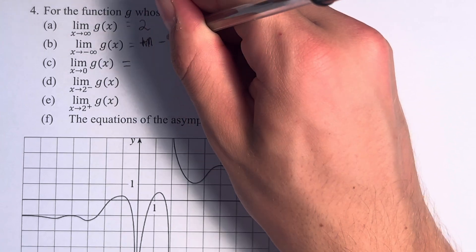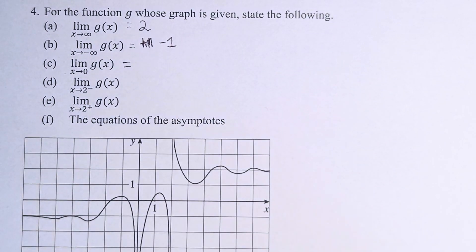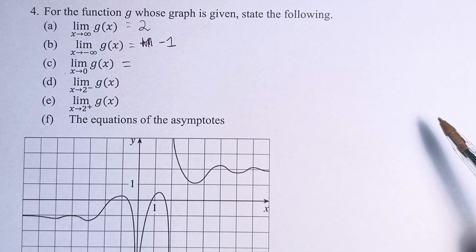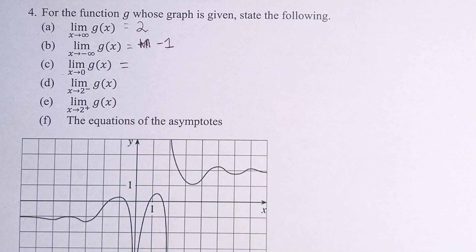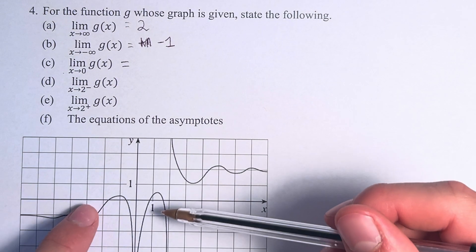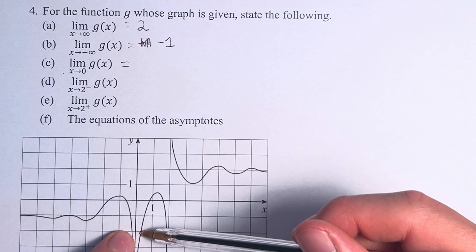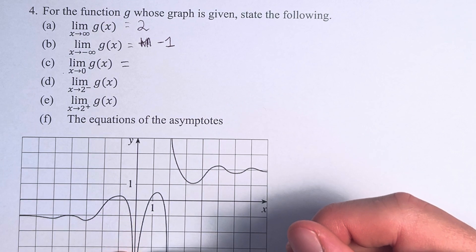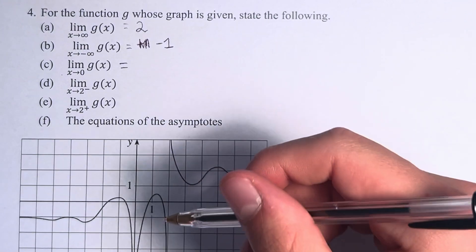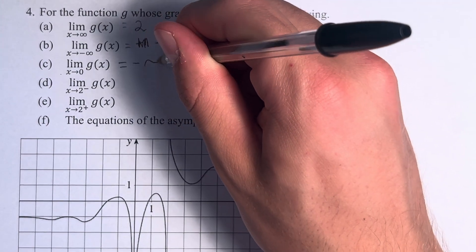The limit as x approaches 0 of g of x is a little bit different. We're saying as the value of x gets closer and closer to 0, where does the value of g of x approach? We can see that as we get closer and closer to x equals 0, the values of g of x are getting smaller and smaller. Therefore, we can say as we get closer and closer, the value of the function is going to approach negative infinity.